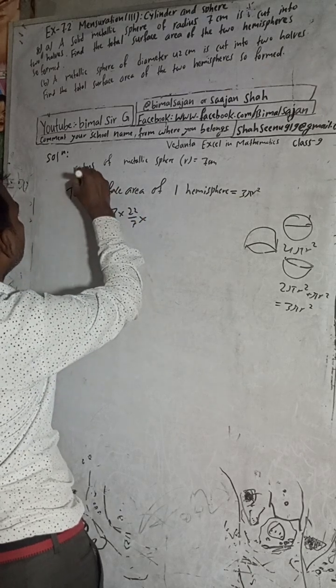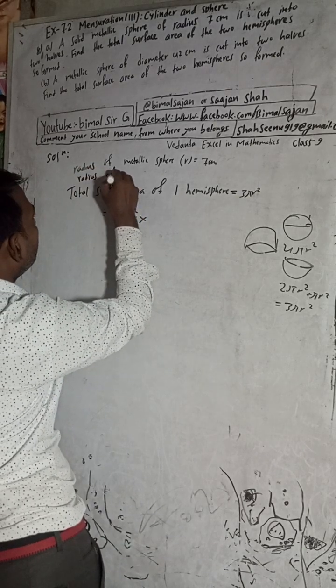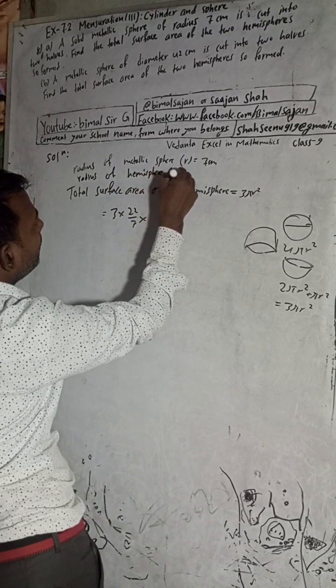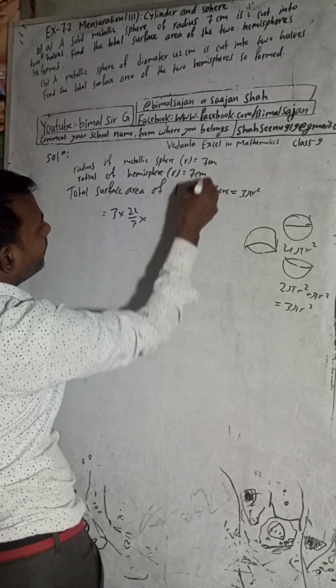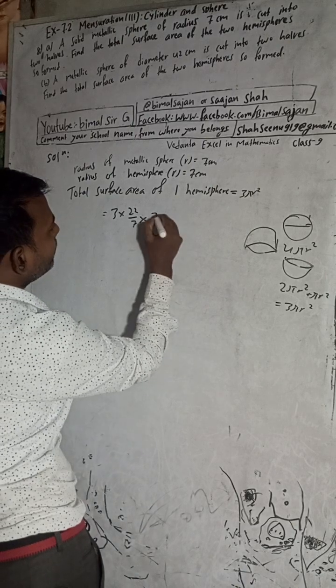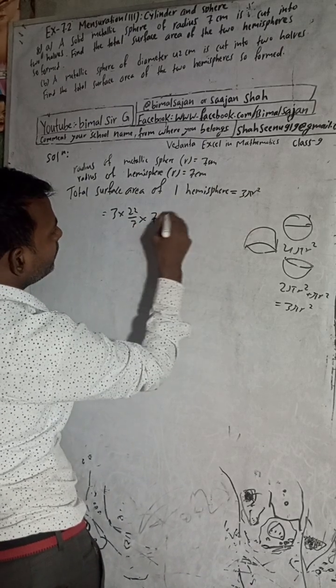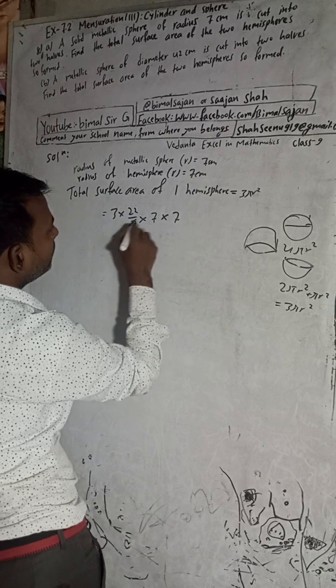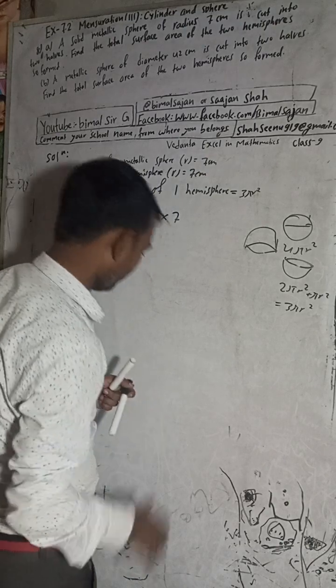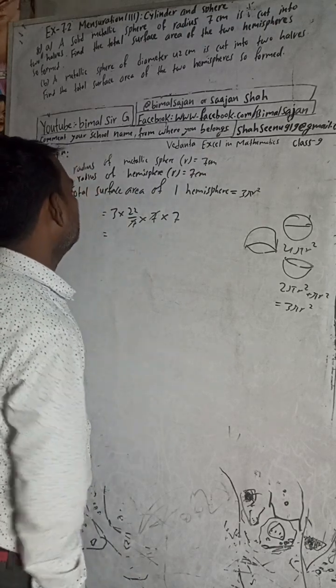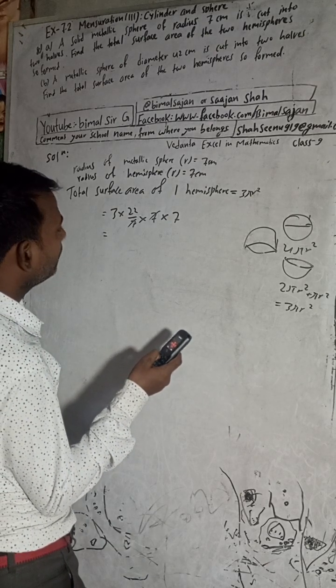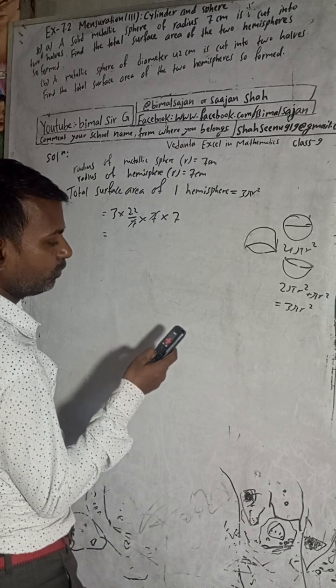Radius is 7, so 7². 7² means two times 7, so cancel once. 7 × 3 = 21, 21 × 22 = 462. So 462 cm².